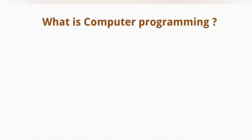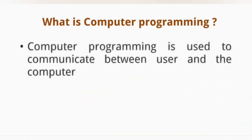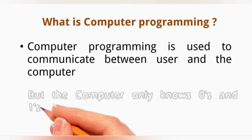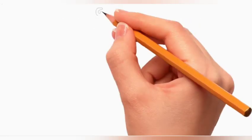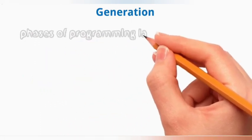Computer programming is used to communicate between user and computer. But the computer only knows zeros and ones, that is binary. Each phase of development made programming languages more comfortable and user-friendly. These phases of development are called generations.